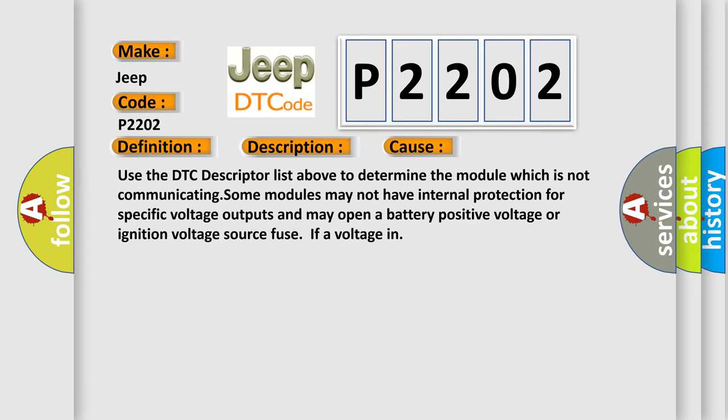Use the DTC descriptor list above to determine the module which is not communicating. Some modules may not have internal protection for specific voltage outputs and may open a battery positive voltage or ignition voltage source fuse.